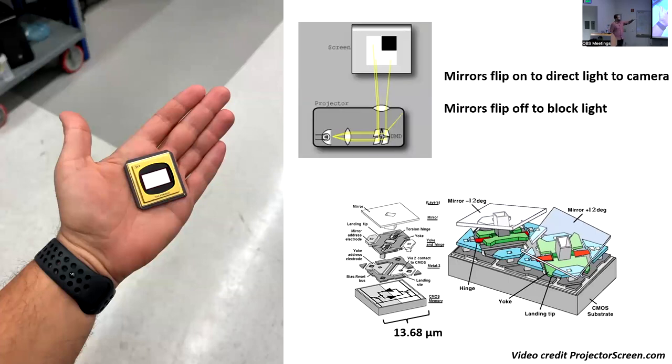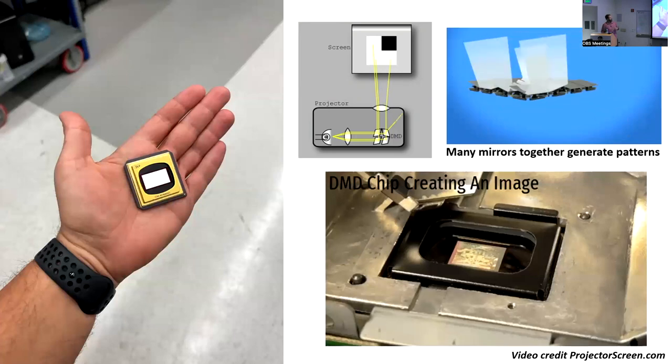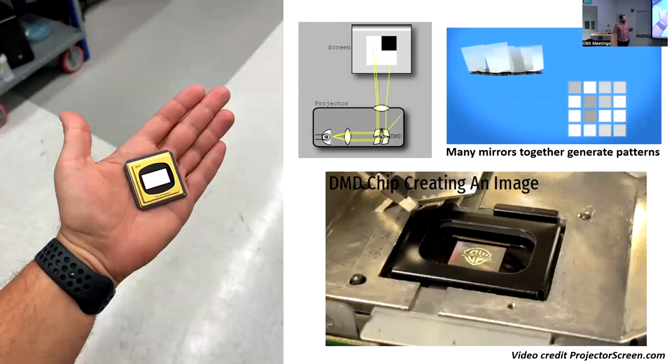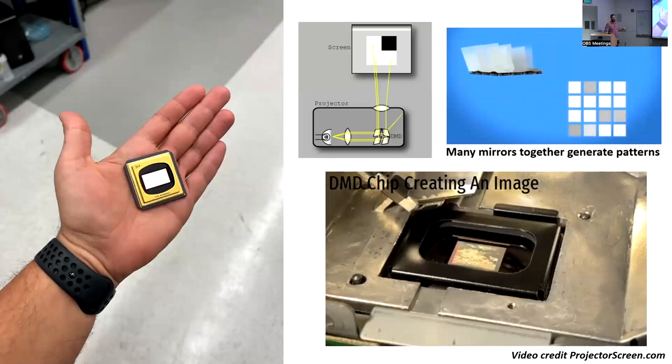Up top here, you can see this in action. This is how it's used in the projector case, where when a mirror flips on, it shines light on the screen. When it flips off, it's not showing any light and it's dumping it somewhere into the projector itself. You can take a lot of these together, and you can essentially modulate the pattern. You can see right here is a DMD where the mirrors are flipping quickly in order to show the Warner Brothers logo at the beginning of a movie. Now we know how DMDs work.